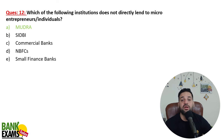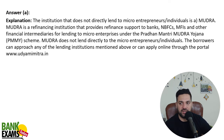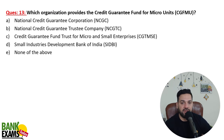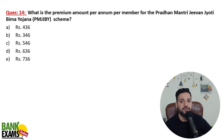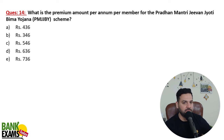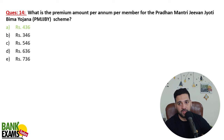MUDRA does not directly lend to micro enterprises or individuals — they refinance. The organization that provides the credit guarantee fund for micro units is the National Credit Guarantee Trustee Company. What is the premium amount per annum per member for Pradhan Mantri Jivan Jyoti Bima Yojana? It is ₹436 per member per annum.